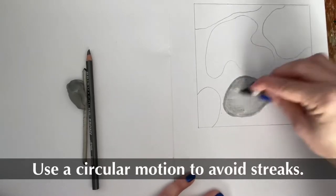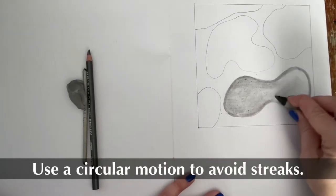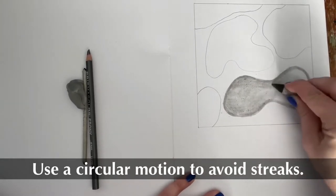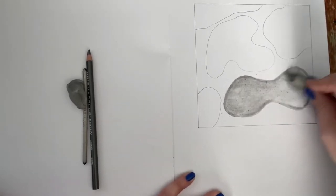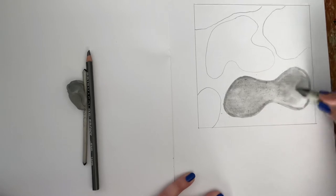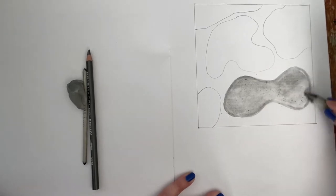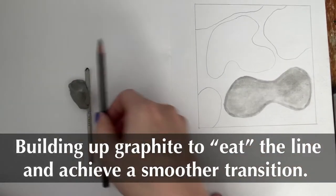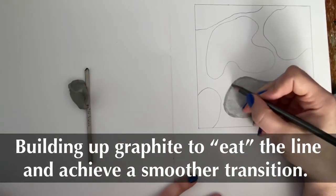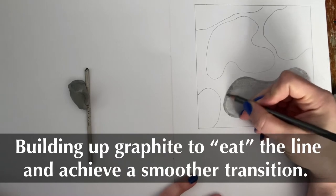And I'm using that circular motion, because if you go vertical, you're going to end up with vertical streaks. And we don't want that. You want a smooth spread. Looks like I may need to build up some of that graphite here, so I have a smooth transition.